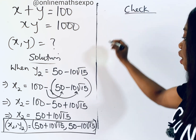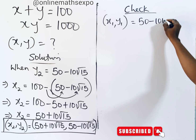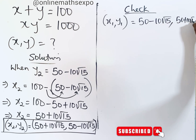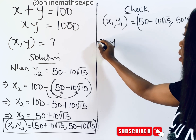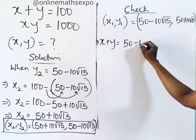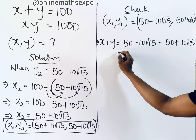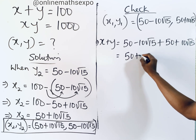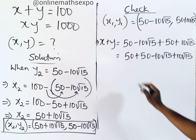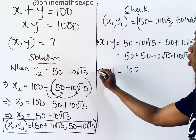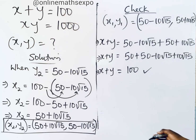Using x equals 50 minus 10 root 15 and y equals 50 plus 10 root 15, we check equation one: x plus y equals (50 minus 10 root 15) plus (50 plus 10 root 15). Collecting like terms: 50 plus 50 equals 100, and negative 10 root 15 plus 10 root 15 cancel out. This gives us 100, which matches the right-hand side. Equation one is verified.